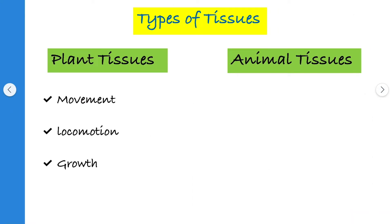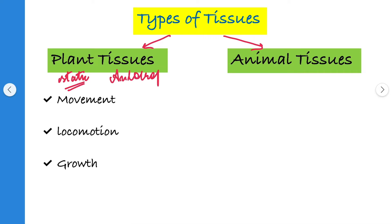Now we will discuss about the types of tissues. There are two types of tissues: plant tissues and animal tissues. Plant tissues are static — as we all know, they do not move from one place to another. Plant tissues are autotrophs, meaning they make their food themselves.